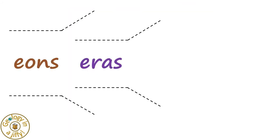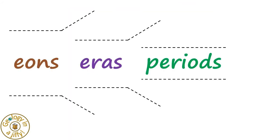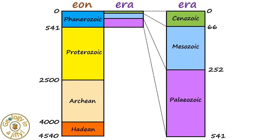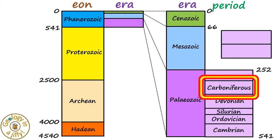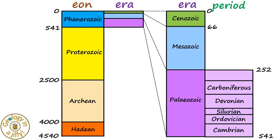Eras are subdivided into periods. The Paleozoic is divided into six periods: the Cambrian, the Ordovician, the Silurian, the Devonian, the Carboniferous — which scientists in North America have divided into the Mississippian period and then the Pennsylvanian period — and then finally, the Permian period.